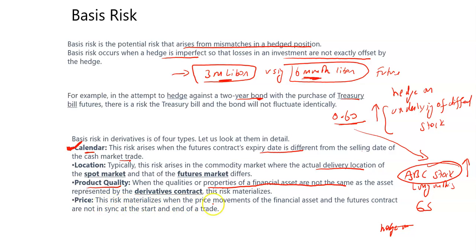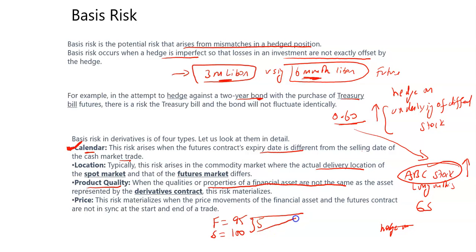Price risk materializes when the price movement of the financial asset and the futures contract are not in sync at the start or the end of the period. For example, if the future is at 95 and the stock price is at 100, there is a gap of 5. In the future, if both are not moving towards each other — for example, if the future price moved more than the movement of the stock price — that also results in basis risk.